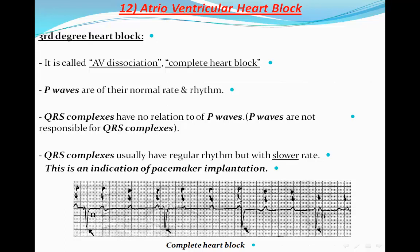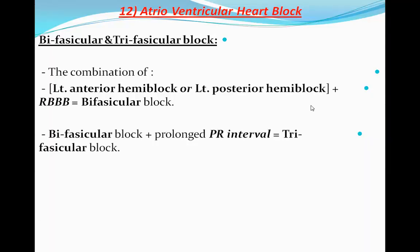In complete heart block, the P wave rhythm is regular and totally different from the QRS complex rate. Complete heart block is also an indication for pacemaker implantation. Bifascicular and trifascicular block: the combination of left anterior hemiblock or left posterior hemiblock plus right bundle branch block is called bifascicular block — meaning two fascicles are blocked. If this bifascicular block is combined with prolongation of the PR interval, we call it trifascicular block.